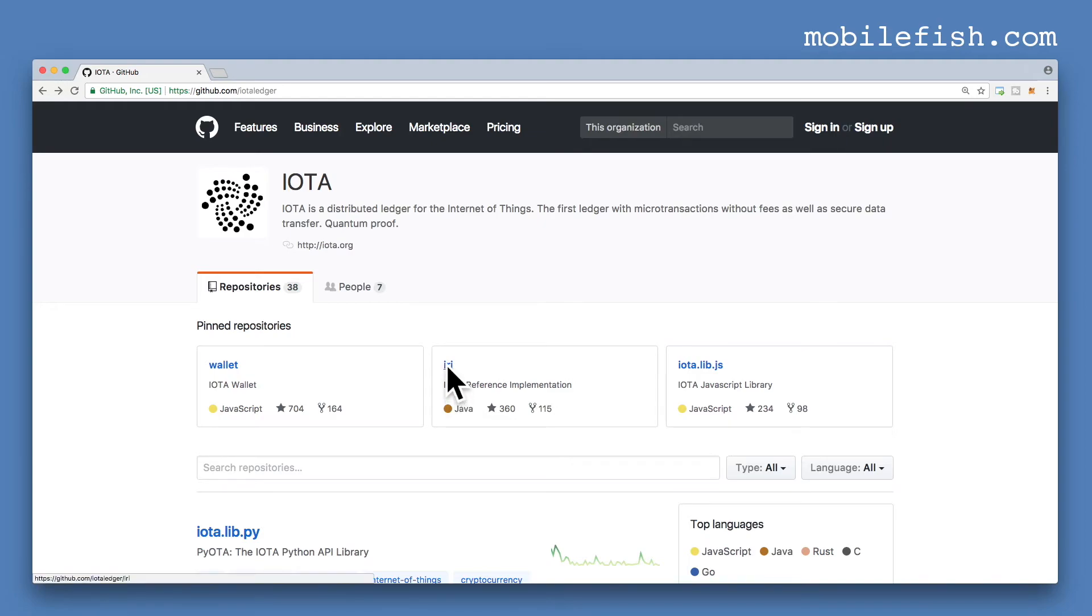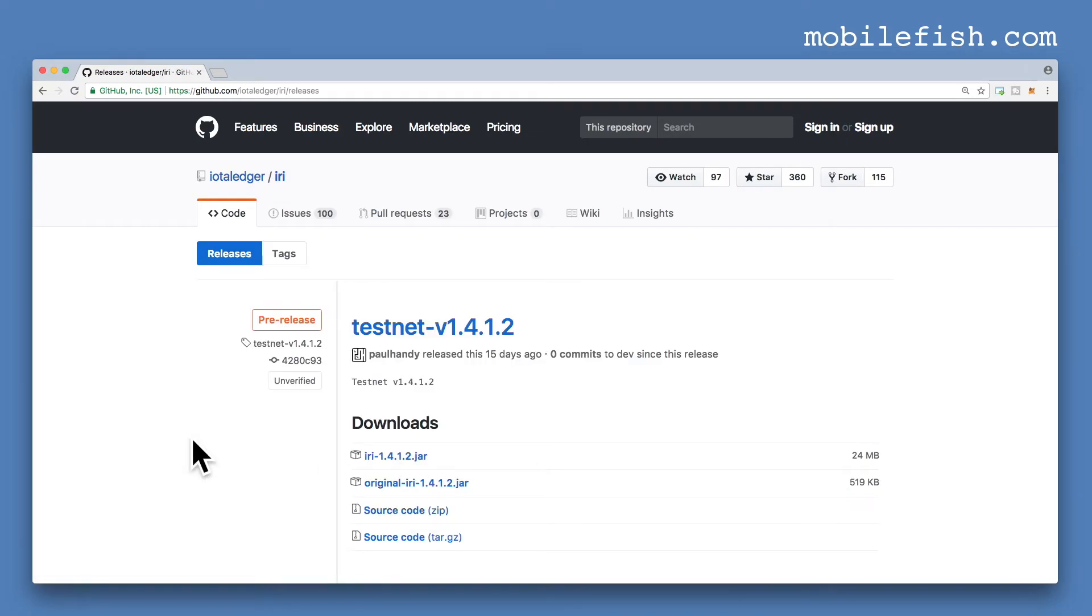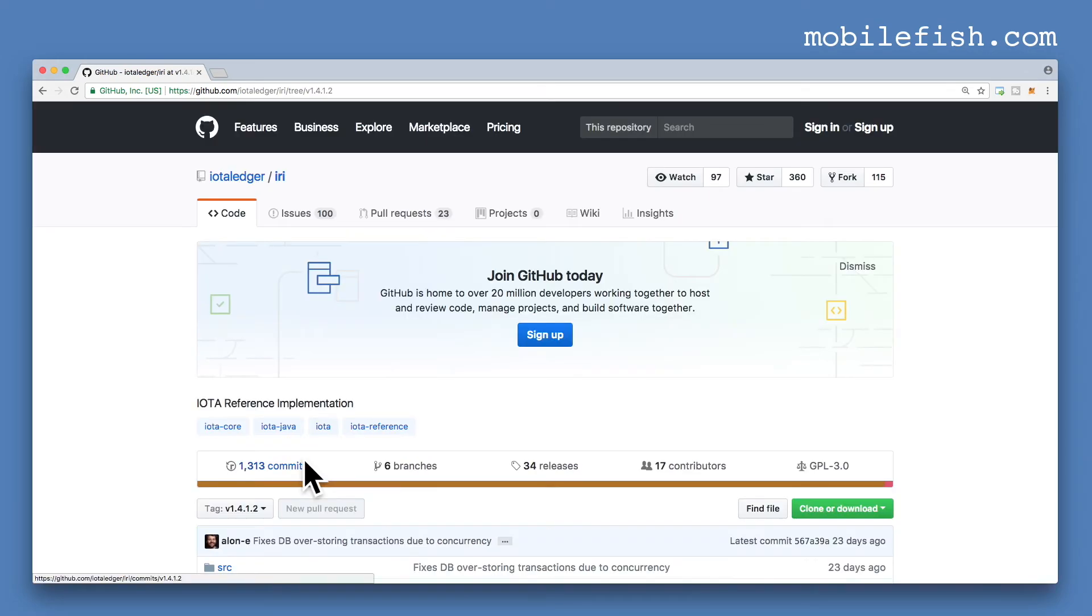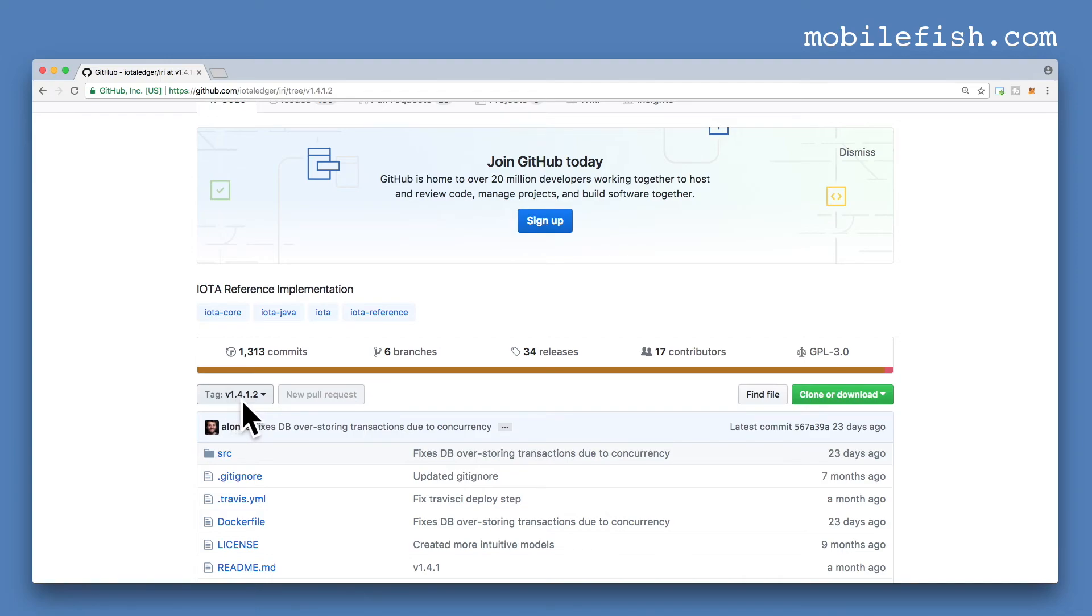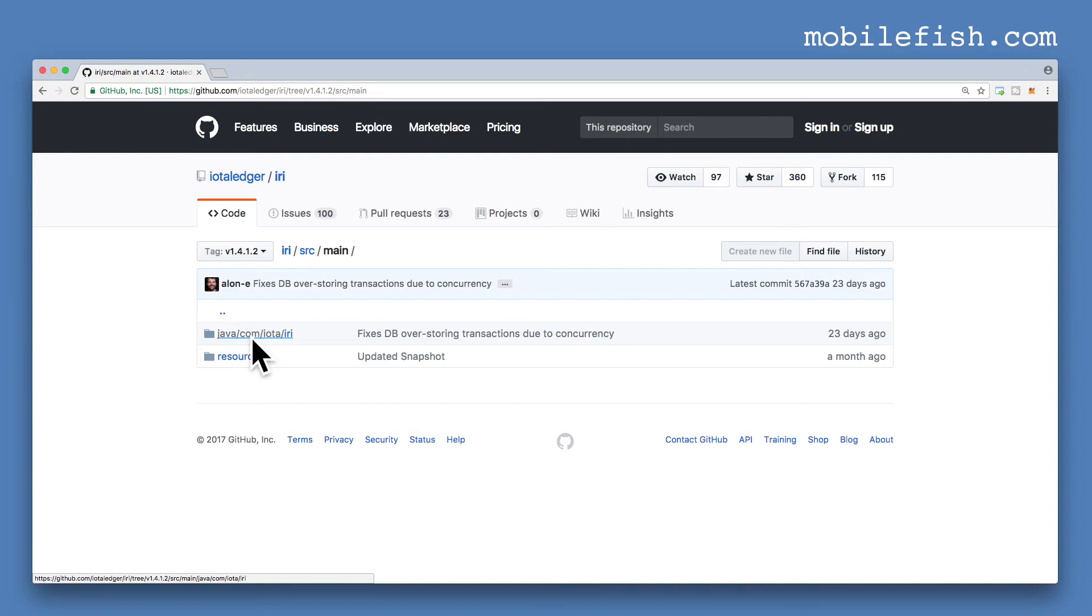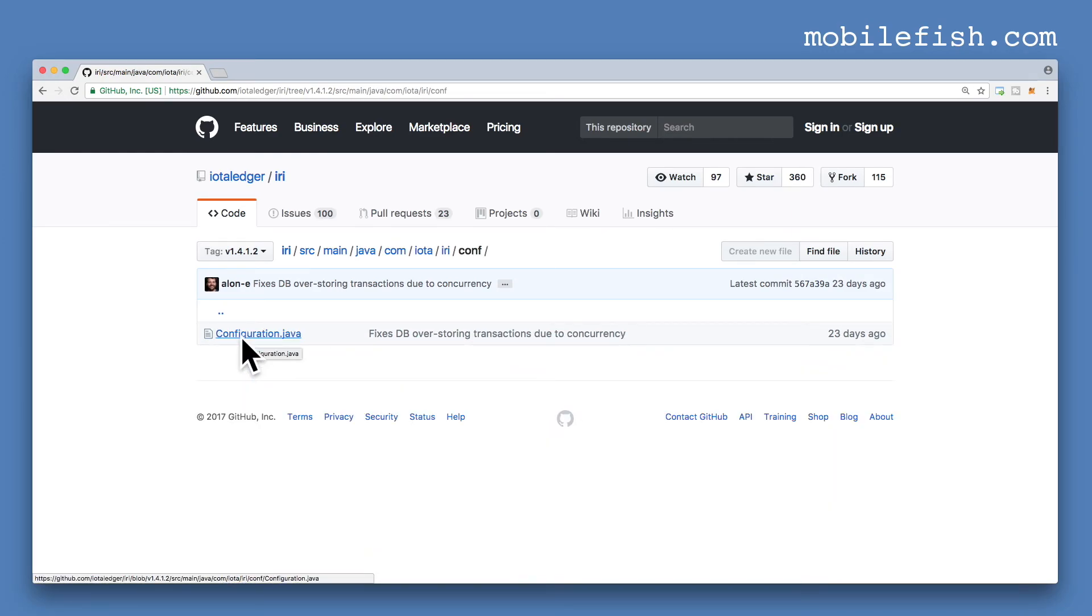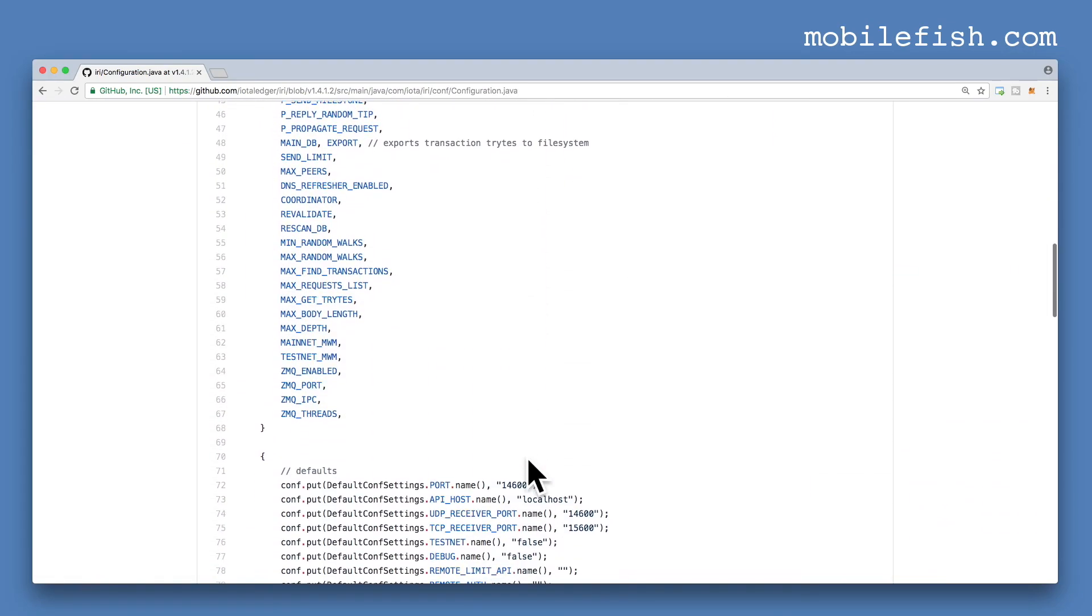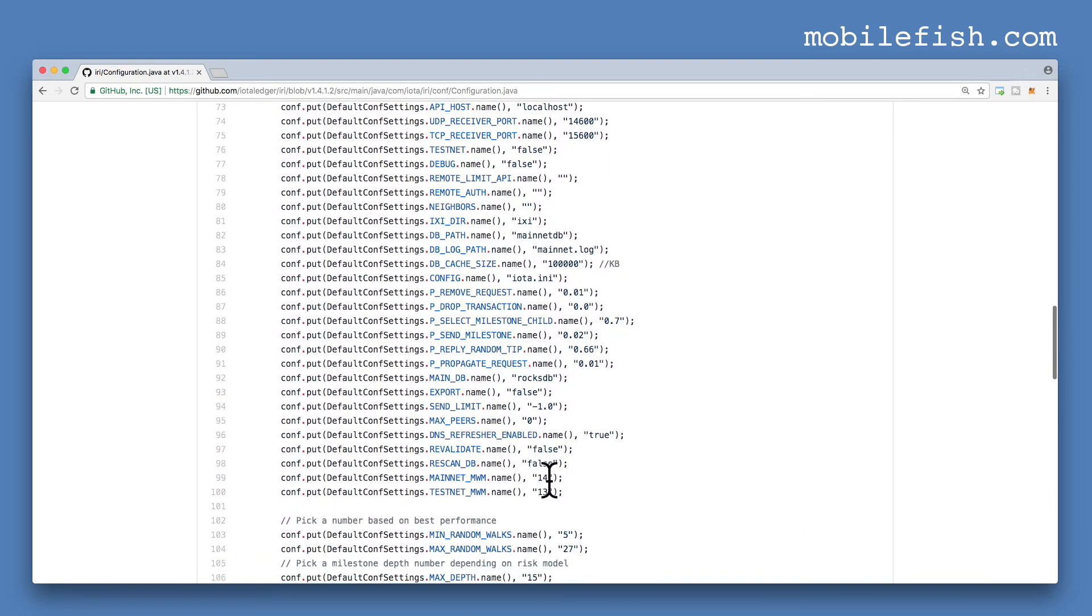This is the IOTA GitHub page. If you want to know what the minimum weight magnitude is, select IOTA reference implementation, select releases. If you want to know the minimum weight magnitude on the main net, then select the latest release version. In this case, main net version 1.4.1.2. Click this link, as you can see, version 1.4.1.2. Select source, select main, select this link, select conf, and select configuration.java file. If you scroll down, you can see the minimum weight magnitude is set to 14.